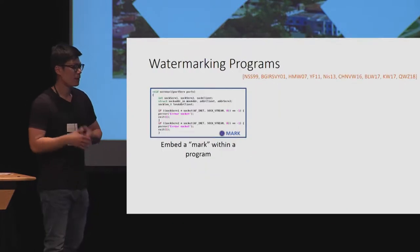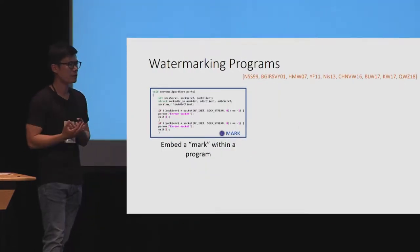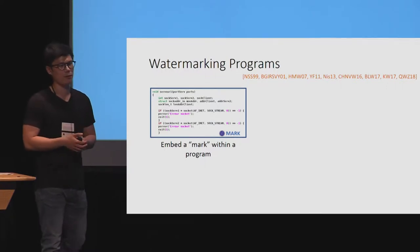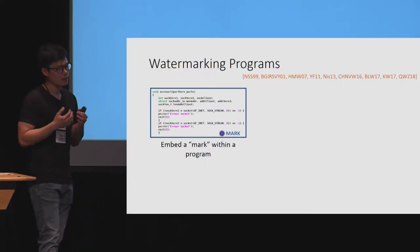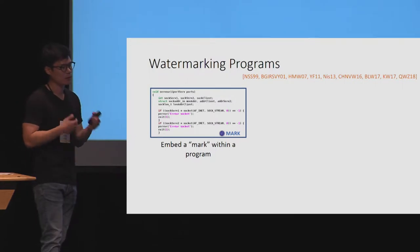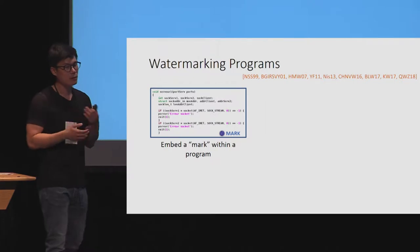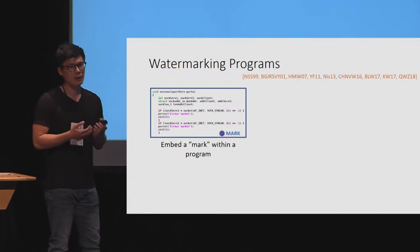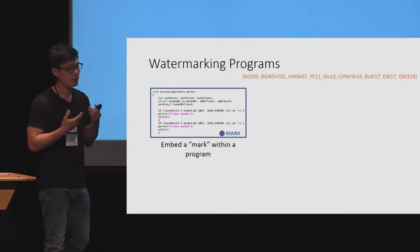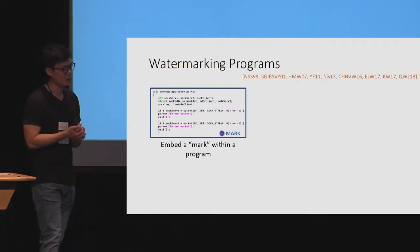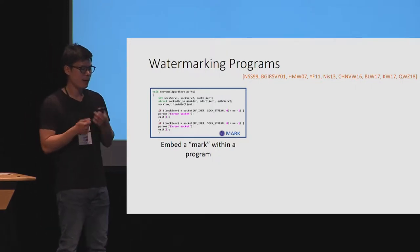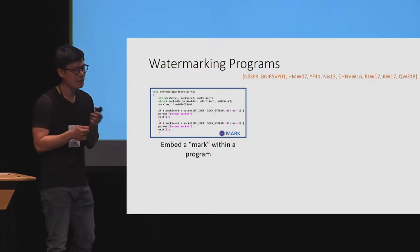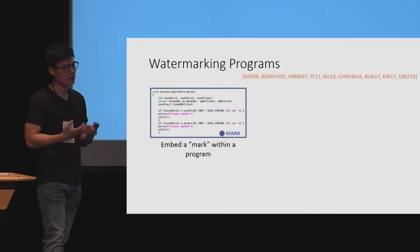Just like how we can talk about watermarking for photos or images, we can also talk about watermarking for software. In this scenario, we want a way to embed a mark into some program or some piece of code while preserving the functionality of the program. We want the final marked program to still be executable and have the same input and output behavior as the original program.